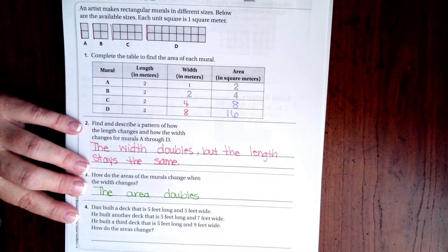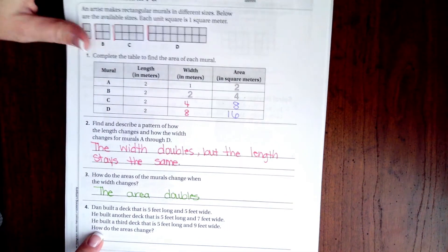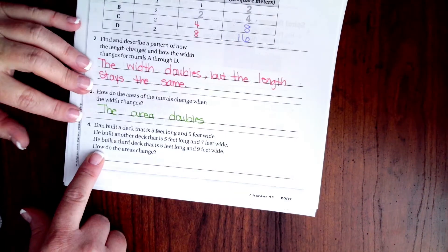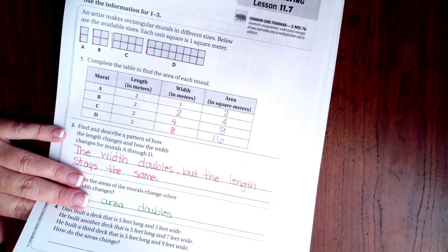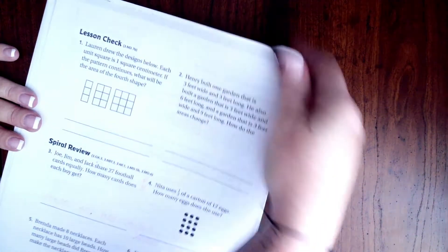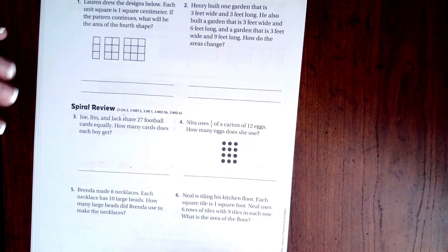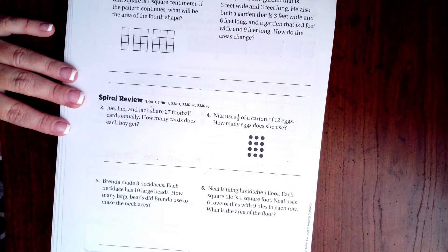I want you guys to try to do number four. All right, so keep trying. We're going to go into the back where you guys are going to do the lesson check just like always, and we're going to go down and do the spiral review.